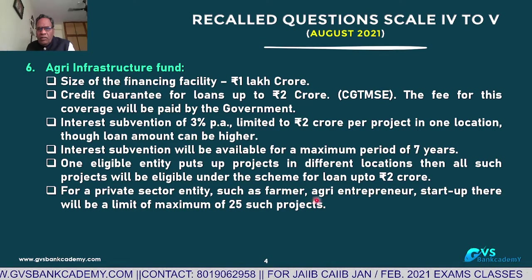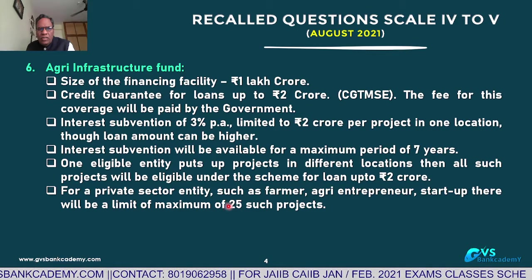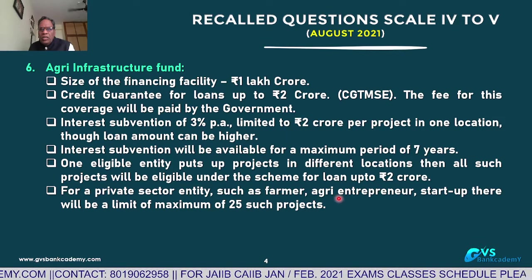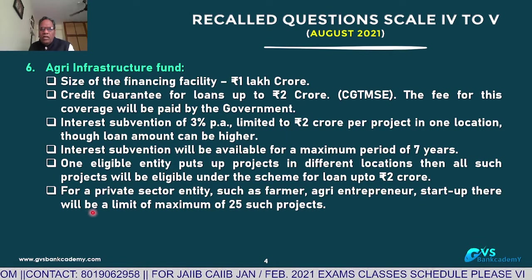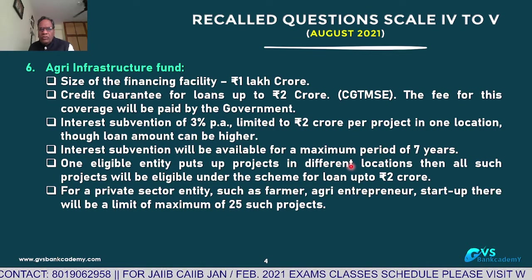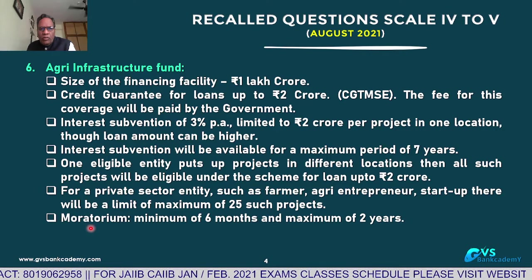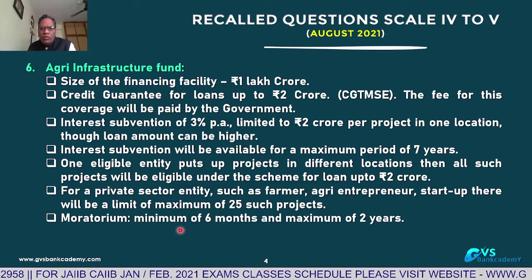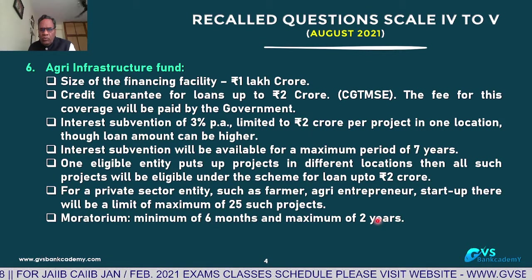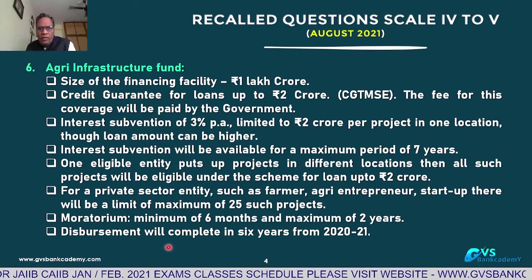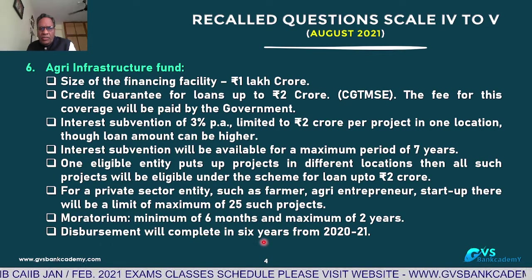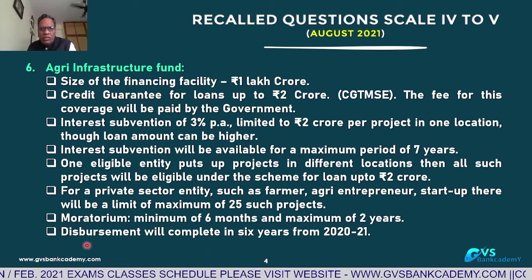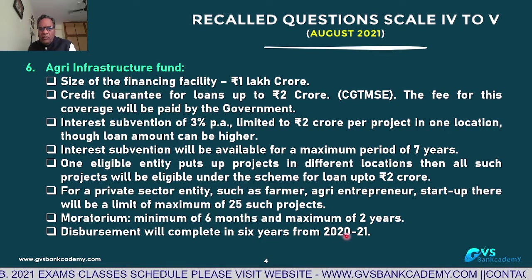For a private sector entity such as a farmer, agriculture entrepreneur, or start-up, there is a limit of maximum 25 projects in 25 locations. Moratorium is minimum 6 months and a maximum period of 2 years for repayment. Disbursement will be completed in 6 years from 2020–21, when it was initiated.